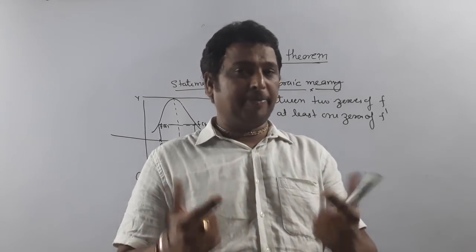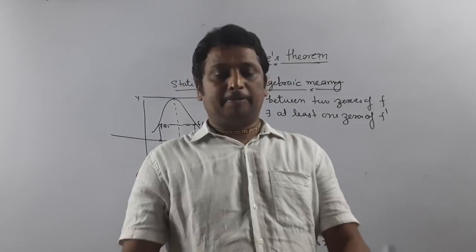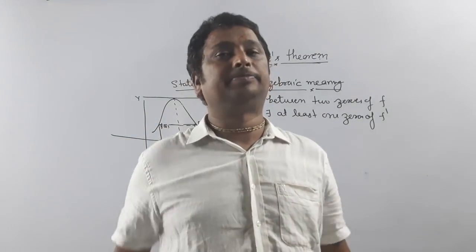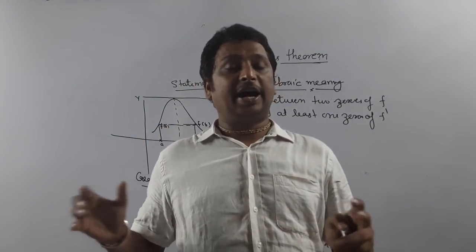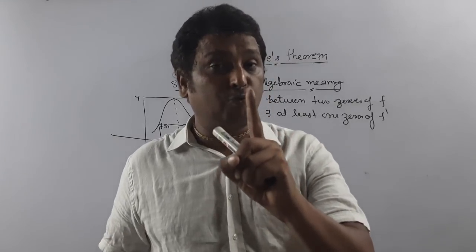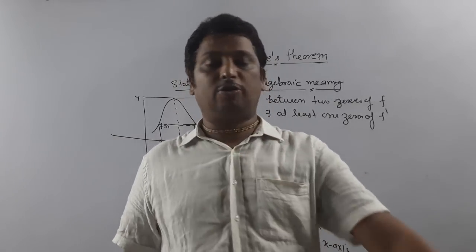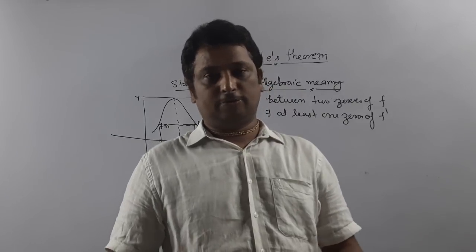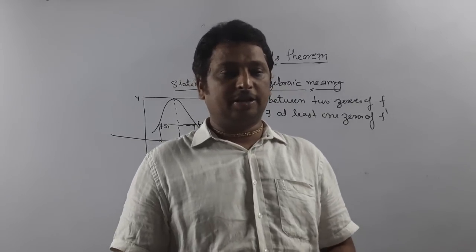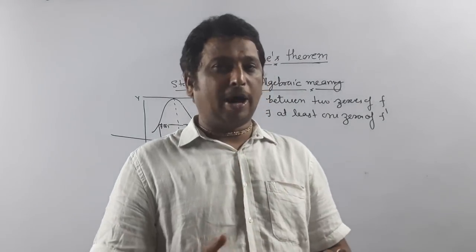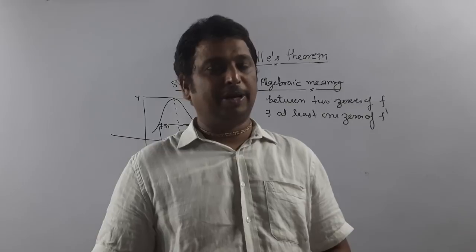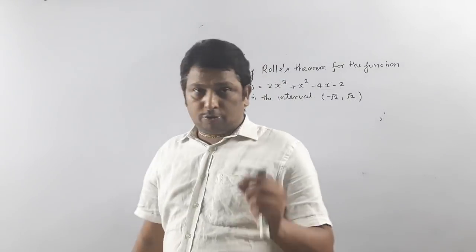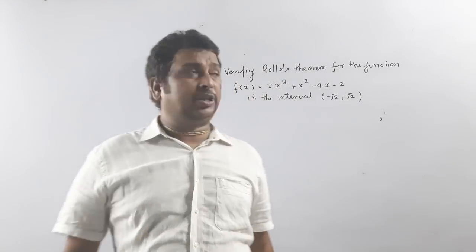So again: between two zeros of f, there exists at least one zero of f'. This is Rolle's Theorem. Now I am going to explain one example to show how we use Rolle's Theorem.